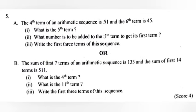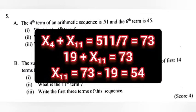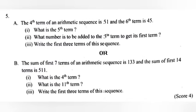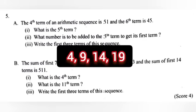Part 2: What is the 11th term? Answer: x₄ + x₁₁ = 511 / 7 = 73, so 19 + x₁₁ = 73, therefore x₁₁ = 73 - 19 = 54. Part 3: Write the first three terms of the sequence. Answer: 4, 9, 14, and 19.